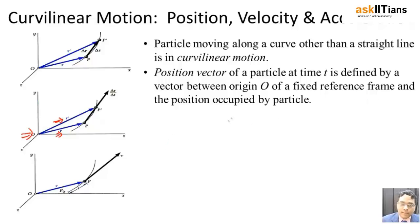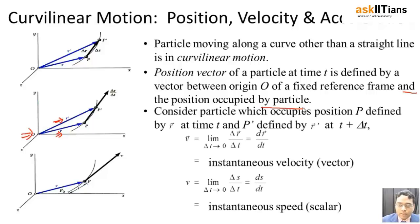As a result, it's going to be the position occupied by the particle at any instant of time. So if I consider that the particle occupies a position P which is given by some displacement r at time t, and P prime is given by r prime.